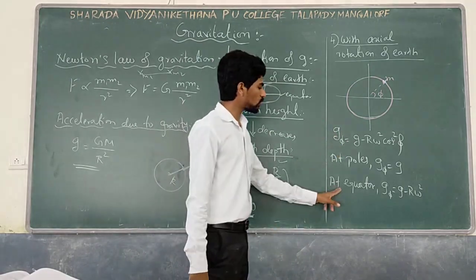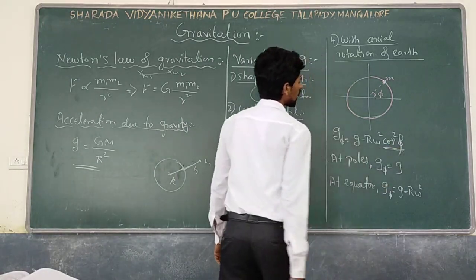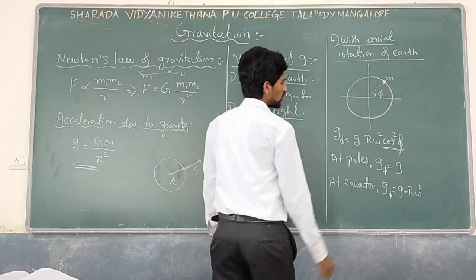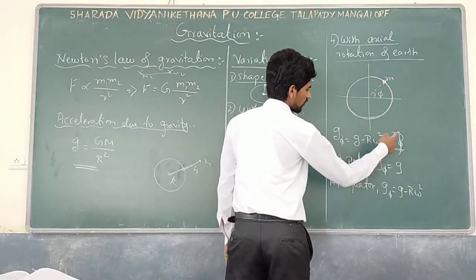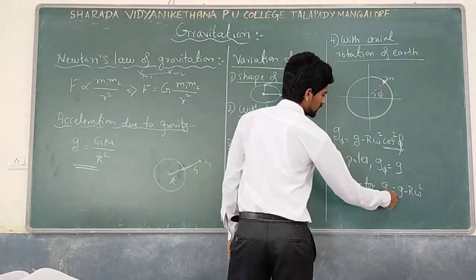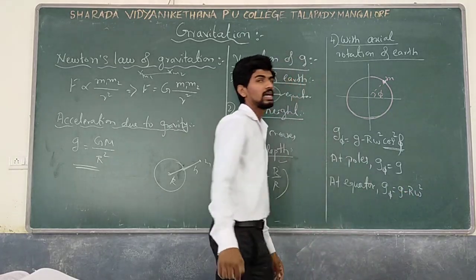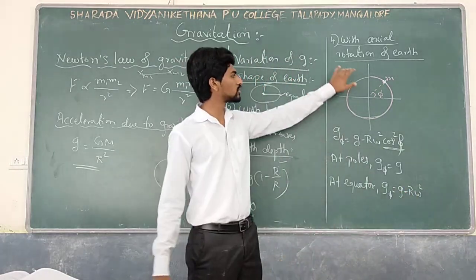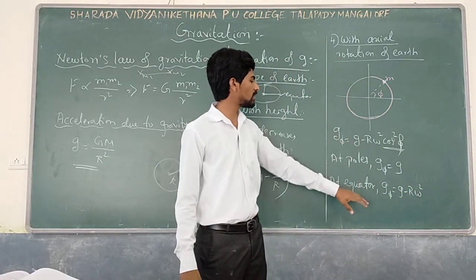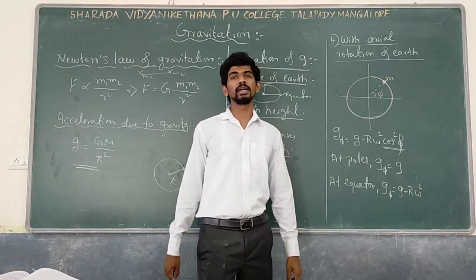At the equator, φ becomes 0, so cos squared φ becomes 1. Therefore g_φ equals g minus R omega square. The effect of rotation on g is maximum at the equator.